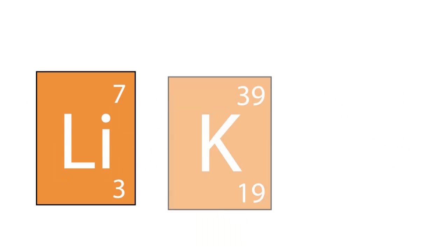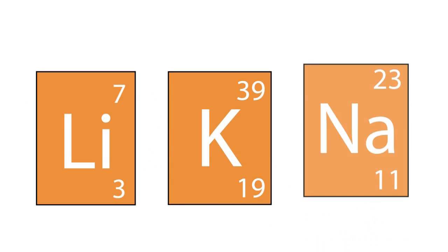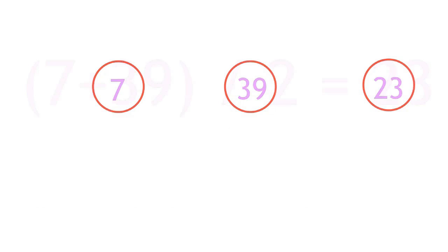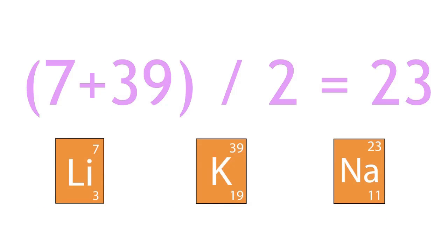An example of one of these triads was lithium, sodium and potassium. The interesting characteristic of triads was that when they were placed in order of their atomic mass, the middle element always had an atomic mass which was an average, or very close to an average of the other two elements in the triad.